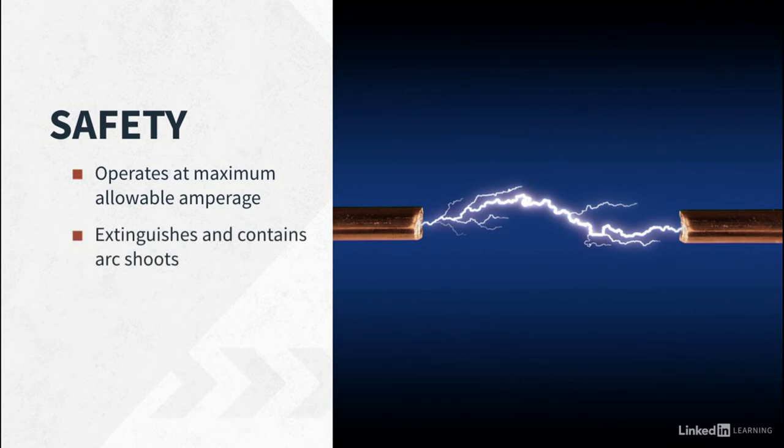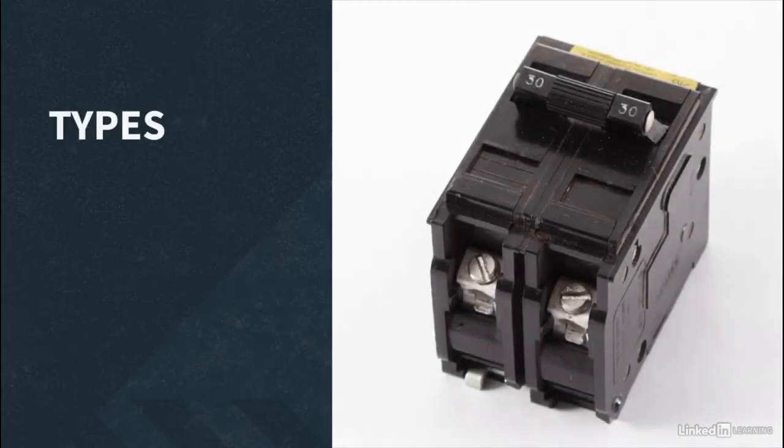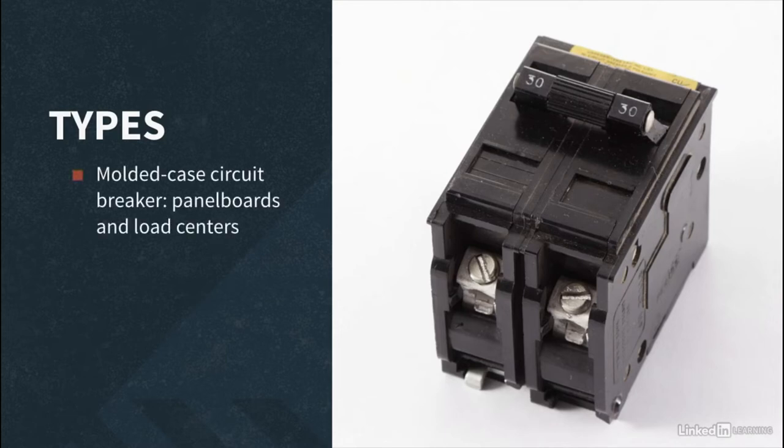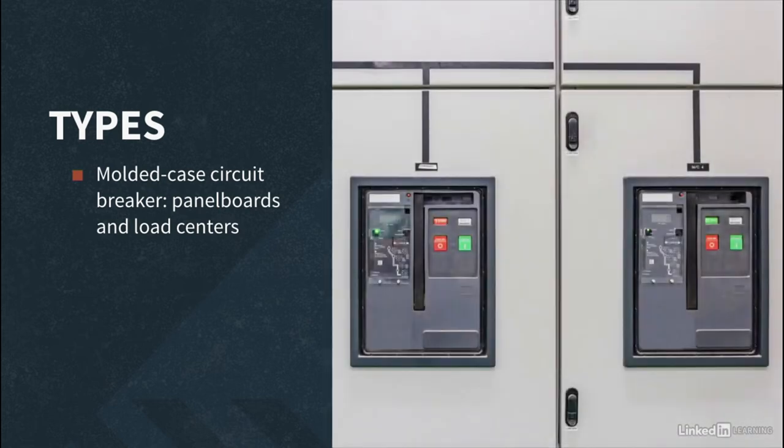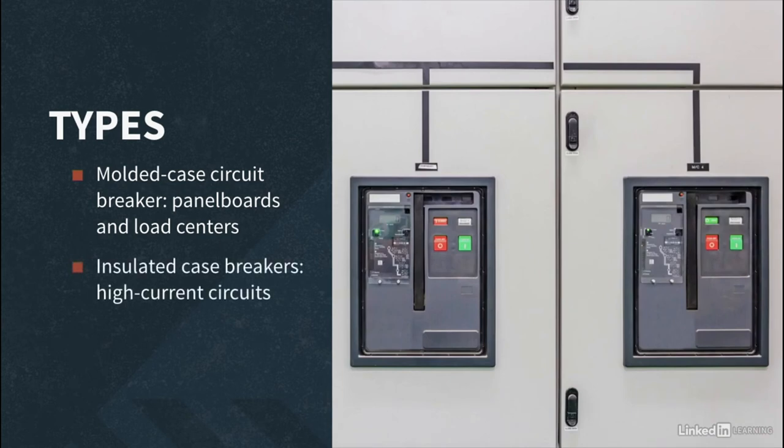Arc chute. Sometimes circuit breakers have a method to extinguish or contain an electrical arc. This is known as an arc chute. There are a few types of circuit breakers that you will see used in electrical distribution. The two main types are smaller molded case circuit breakers, like this one, used in panelboards and load centers, and larger power circuit breakers, also known as insulated case breakers. These are used on large circuits and equipment that use high current.